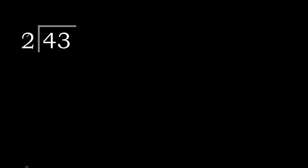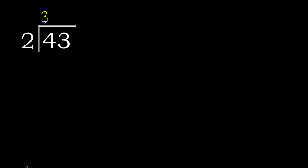43 divided by 2. 4 is not less than 2, therefore with 4: 2 multiplied by 3 is 6, but 6 is excessive. 2 multiplied by 2 is 4; 4 minus 4 is 0.